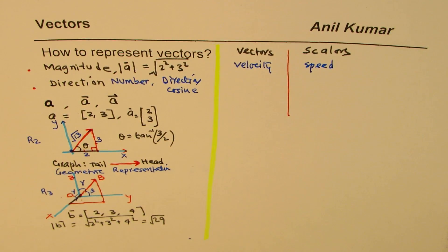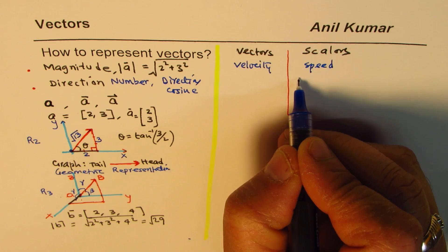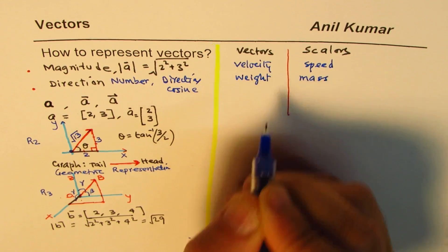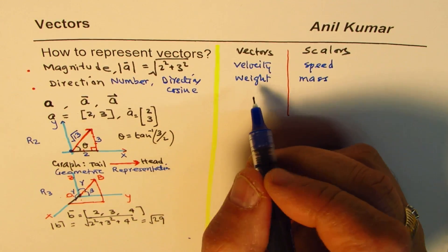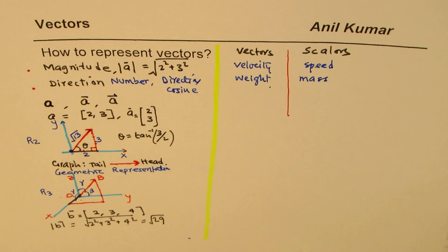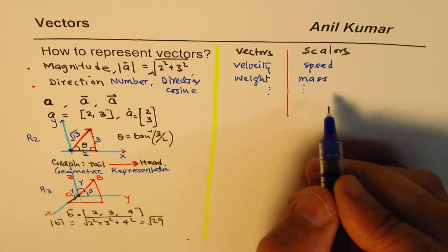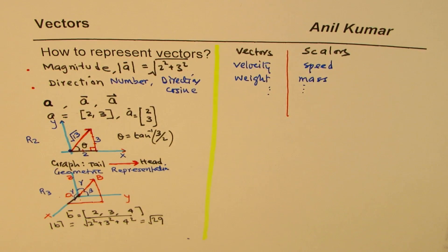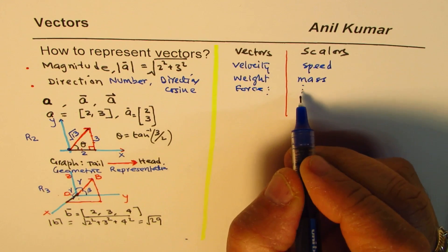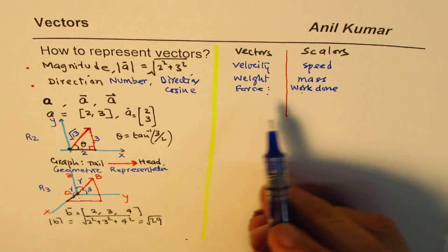Mass is just contained in a body — it's a scalar. Weight acts downward due to gravity and has a direction, so weight is a vector quantity. Similarly, force is a vector and work done is a scalar.